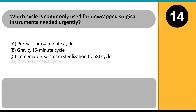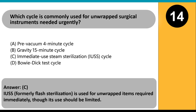Which cycle is commonly used for unwrapped surgical instruments needed urgently? A. Pre-vacuum 4-minute cycle. B. Gravity 15-minute cycle. C. Immediate use steam sterilization (IUSS) cycle. D. Bowie-Dick test cycle. Answer: C. IUSS, formerly flash sterilization, is used for unwrapped items required immediately, though its use should be limited.